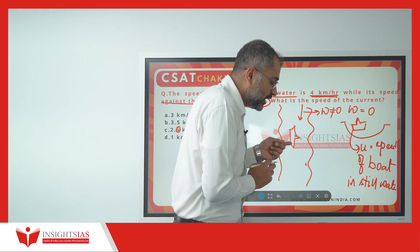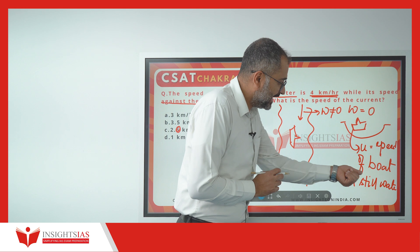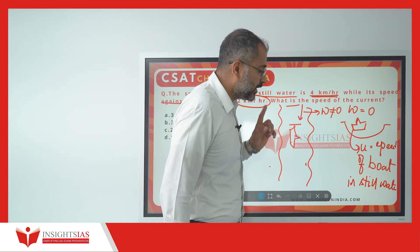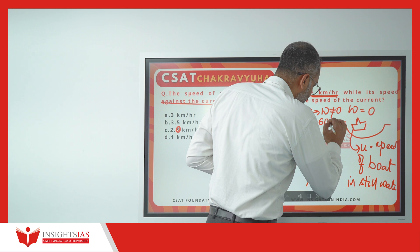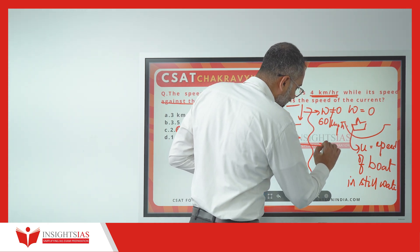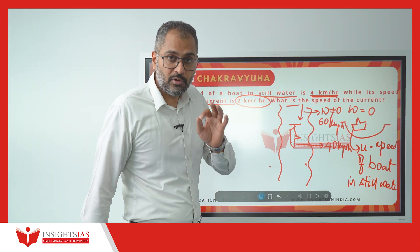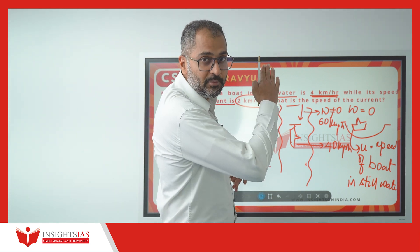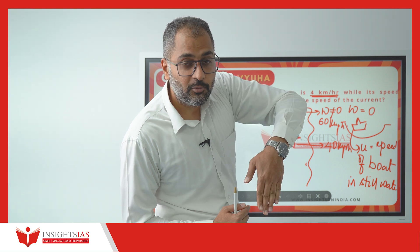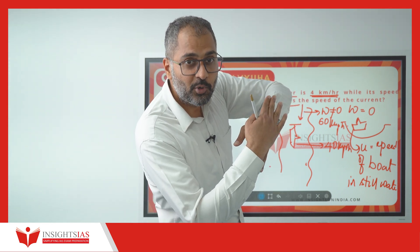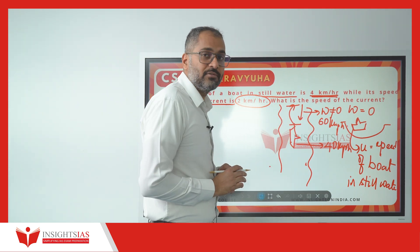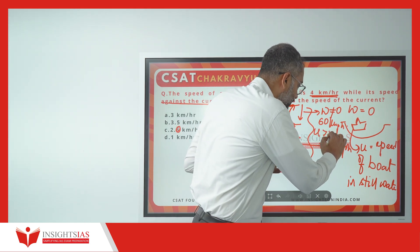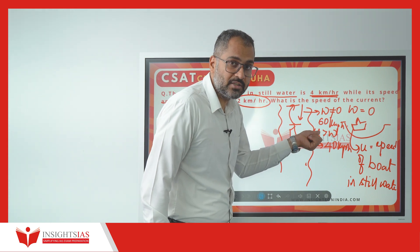If the same boat wants to travel upstream — from this point to this point — for example, if the speed of water is 60 km per hour and the speed of the boat in still water is 40 km per hour, the resistance of the water will be greater than the force of the boat. Hence the boat cannot travel upwards. For the boat to travel upstream, the speed of the boat always has to be greater than the speed of the water.